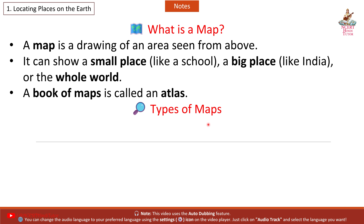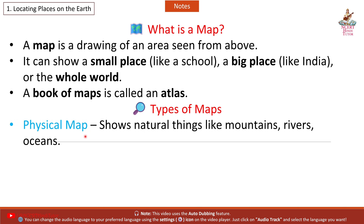Types of Maps. First, Physical Map: shows natural things like mountains, rivers, and oceans.